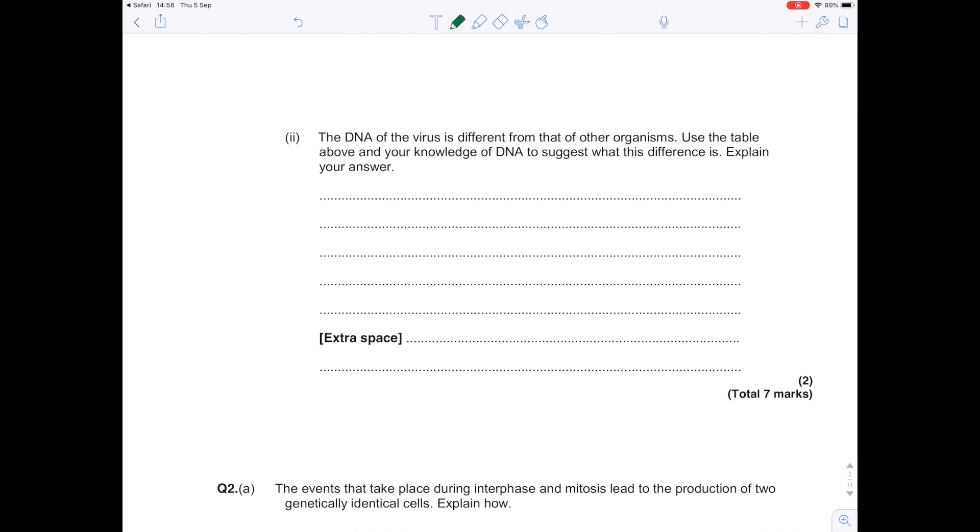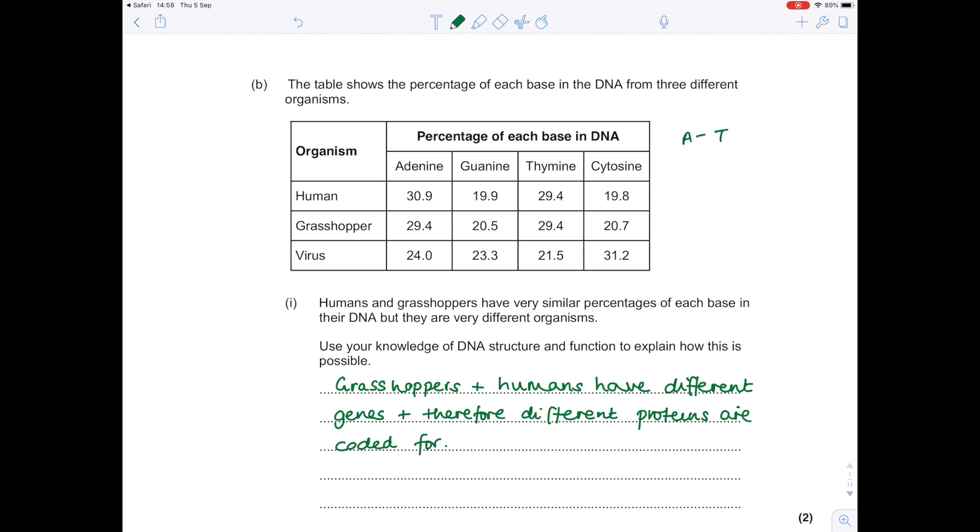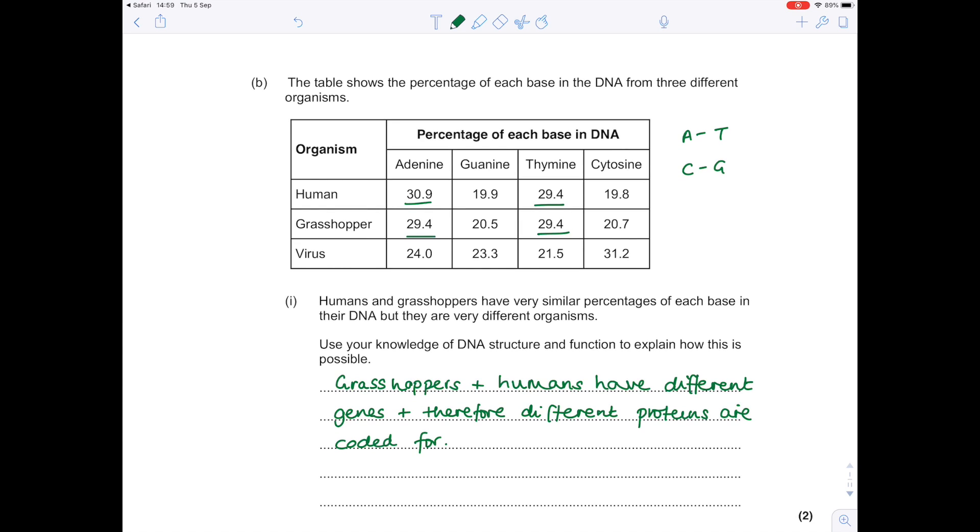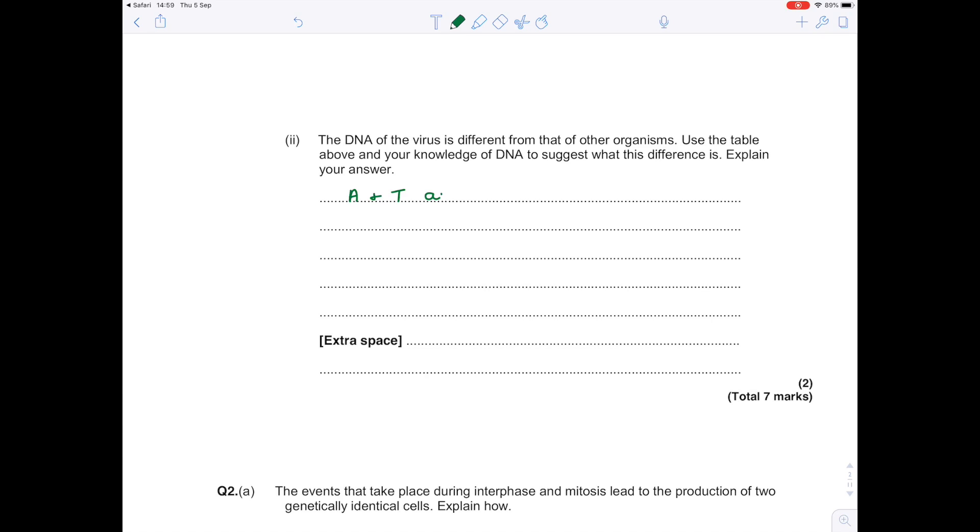The DNA of the virus is different from that of other organisms. Use the table above and your knowledge of DNA to suggest what this difference is and explain your answer. Remember that the base pairing is as follows: A to T and C to G. Which makes sense because you have the same approximate amounts of adenine and thymine in the human, and the same with the grasshopper. However, with the virus, the adenine and the thymine amounts are not the same, and the same is true for guanine and cytosine. So they can't be pairing up in the same way. This indicates therefore that we don't have our typical DNA double strand—in fact it's single. Adenine and thymine, and cytosine and guanine are not found in equal amounts in the virus, indicating that base pairing cannot occur. DNA is therefore single-stranded.